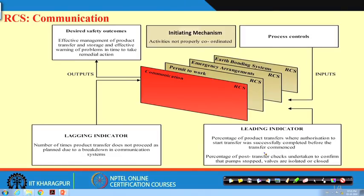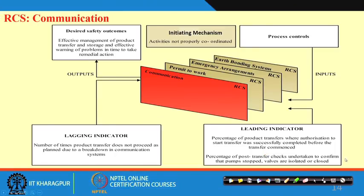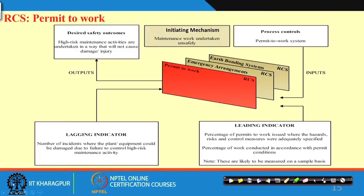Similarly, permit to work is very, very important — especially the energy isolations part of permit to work. If you do permit to work and energy isolations properly during maintenance and operations, people will not get hurt. Believe me, 80 percent of fatalities and major incidents are attributable to energy isolations alone. That is why I decided to take one full session on energy isolations. People do not have proper concepts of energy isolations, and that is why OHS management systems are not effectively controlled.